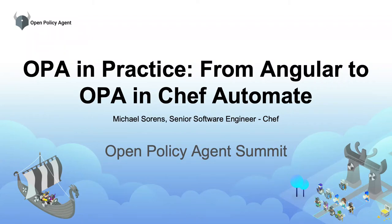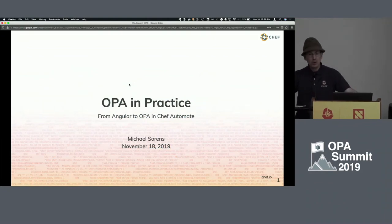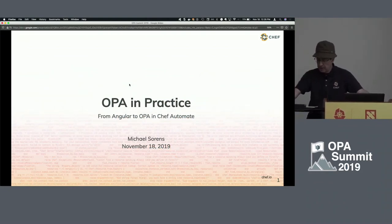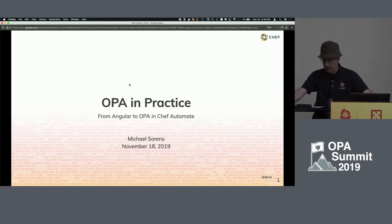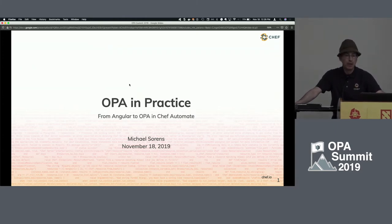Good afternoon everybody. My name is Michael Sorens. I'm a senior software engineer at Chef Software. In this short time slot, I hope to guide you safely through a coding maelstrom with OPA at the center of that storm. It's a hodgepodge of exposition, tutorial, and tips, but they work together to paint a picture of how a found authorization system with OPA at its core could be put together.